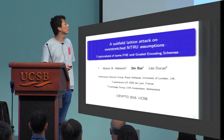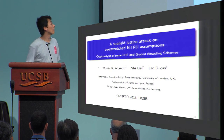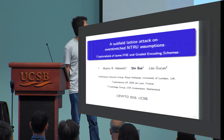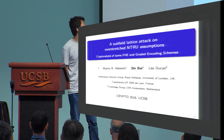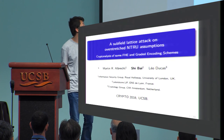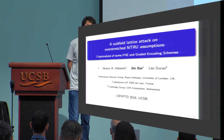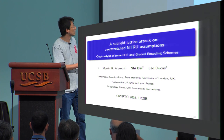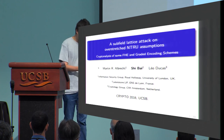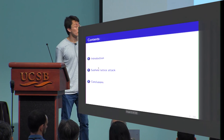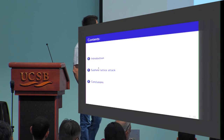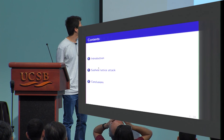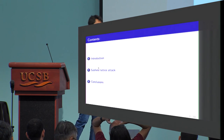Hello everyone, thanks for coming to my session. I'm going to talk about a subfield lattice attack for over-stretched NTRU assumptions with some application for cryptanalysis of NTRU-based FHE schemes and GGH-like graded encoding schemes. This is joint work with Martin Albert from Roy Hollow and Leo Ducard from CWI. I'll give an introduction of the over-stretched NTRU assumption, then talk about the method for the subfield lattice attack, and summarize with some recommendations.